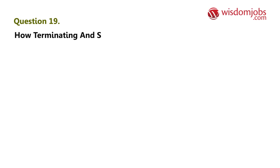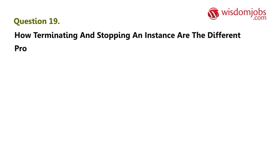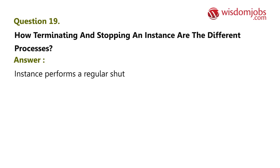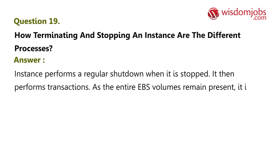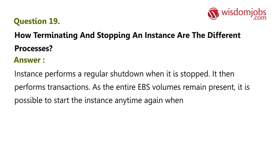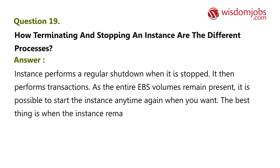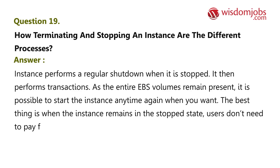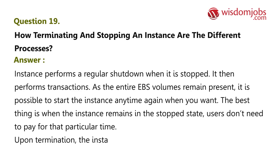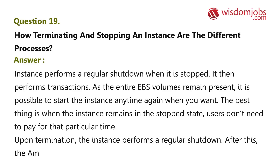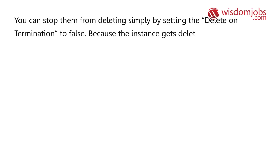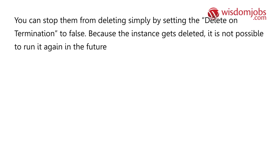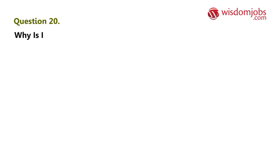Question 19: How are terminating and stopping an instance different processes? Answer: When an instance is stopped, it performs a regular shutdown, and the EBS volumes remain present — you can start it again anytime. Users don't need to pay for the time the instance is in a stopped state. Upon termination, the instance performs a regular shutdown and the Amazon EBS volumes start deleting. You can prevent deletion by setting 'Delete on Termination' to false. Once deleted, it cannot be run again.